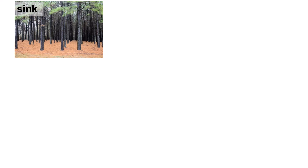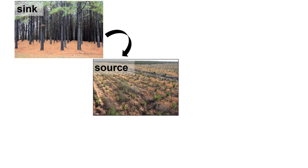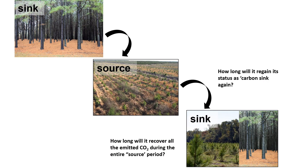This forest is a carbon sink when net CO2 is mostly going inside the forest system, and a net carbon source when net CO2 is going away from the system. Therefore, if we suppose we have a mature forest and it is a carbon sink, but suddenly we harvest, thus making it into a carbon source, one question is: how long does it take to regain its status as a carbon sink again? Second, how long will it take to recover all of the emitted CO2 from harvesting during the entire net carbon source period?